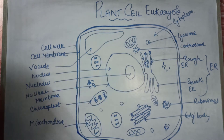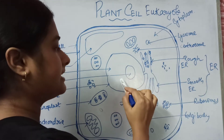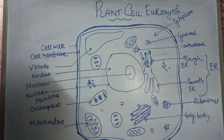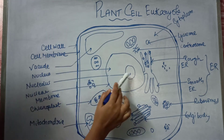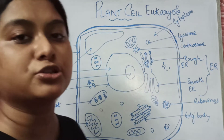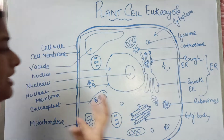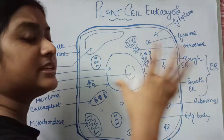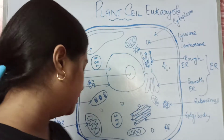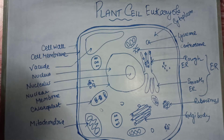The nucleolus is present within the nucleus. The fluid-filled space inside the nucleus is the nucleoplasm, and the nucleus is surrounded by a double membrane known as the nuclear membrane. The nucleolus helps in the formation of ribosomal RNA and ribosomes, and these ribosomes eventually help in producing proteins. So the main function of the nucleolus is related to protein synthesis.